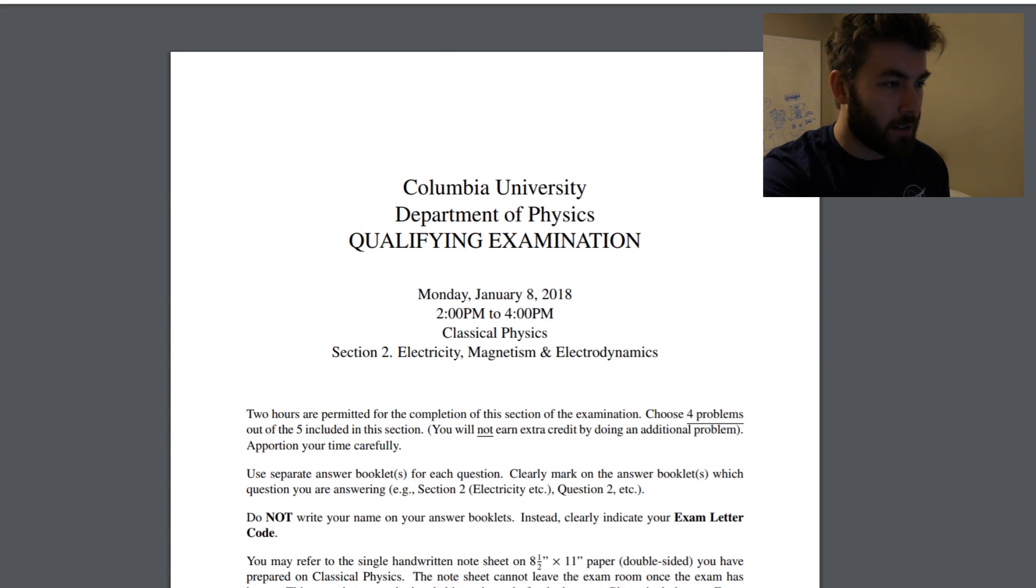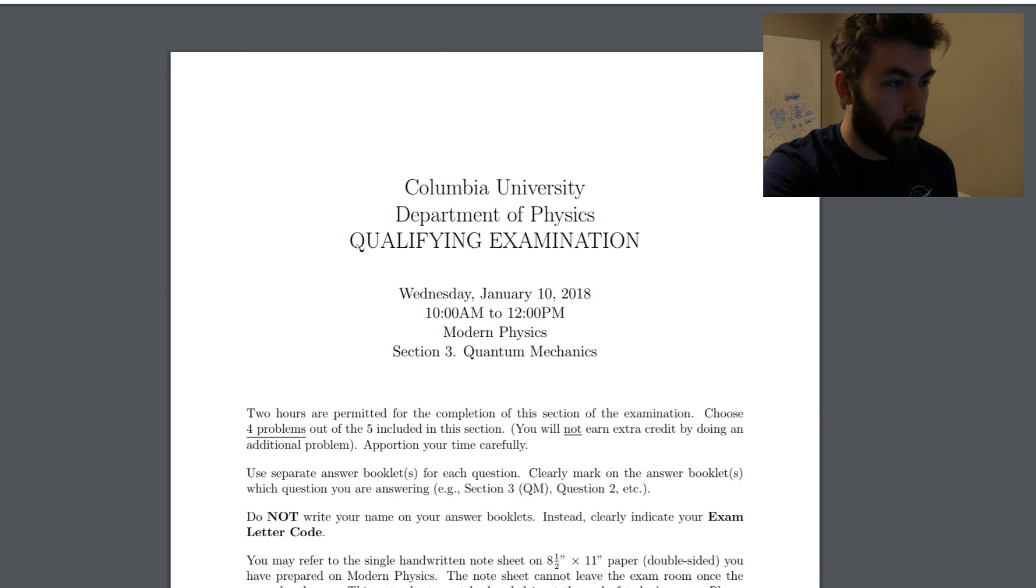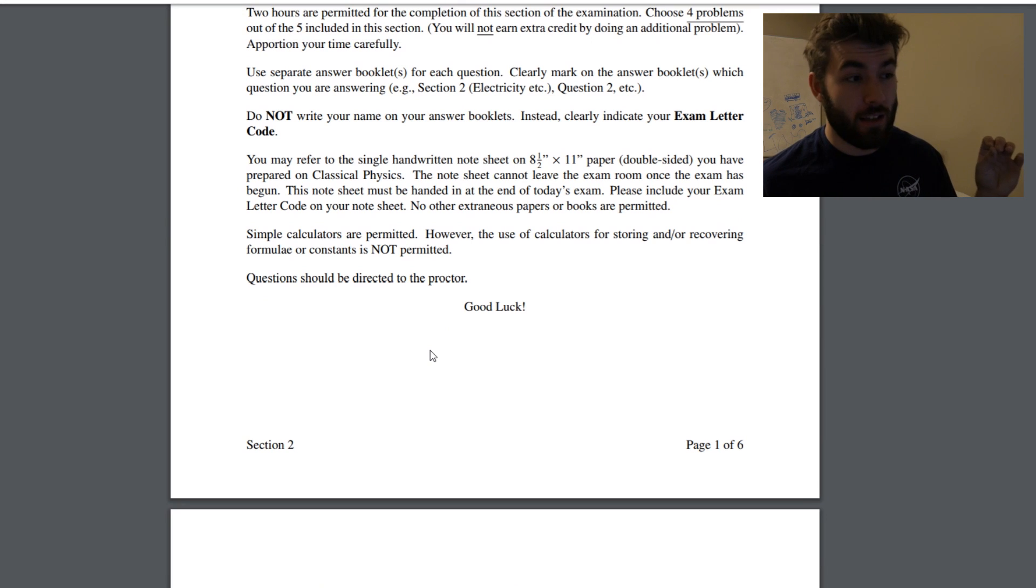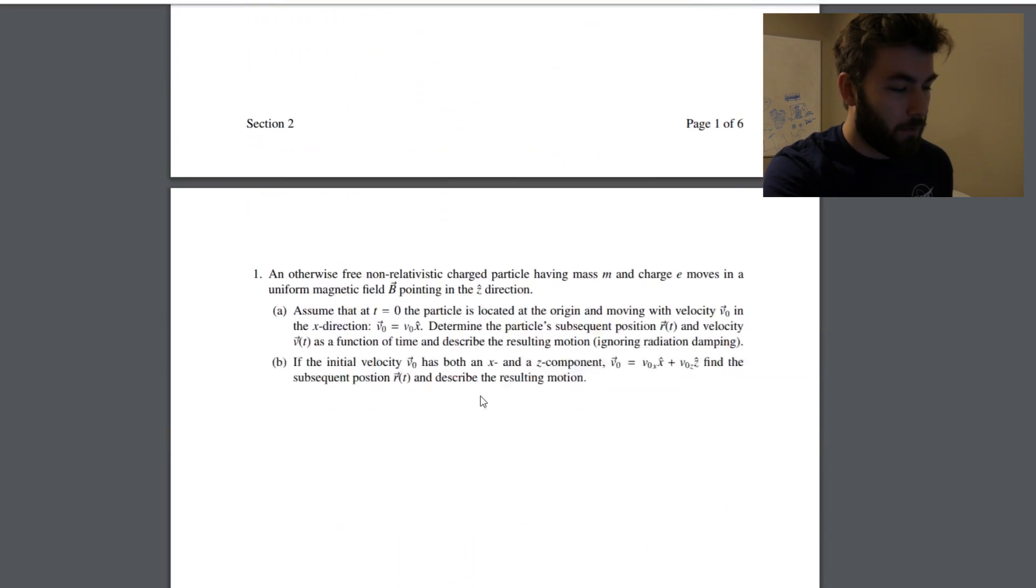The first one that I came across was one from Columbia University, and it has all the different sections and you can see kind of what level—I mean that's a great school—I don't think that they would be more difficult than a school like that, so you could see I guess maybe what an upper bound looks like. I don't know, maybe that's the wrong way of thinking about it, who knows, I don't really care.